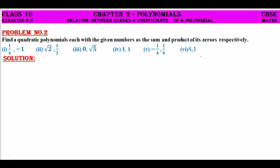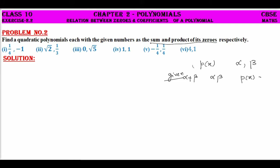Now in our previous problem, we were given a polynomial P of X and asked to find the zeros of the polynomial — alpha and beta. Polynomial is given, you are asked to find the zeros. In this problem, you are given the sum and product of zeros and asked to find the polynomial. The sum and product of zeros means you are given alpha plus beta and alpha into beta. You have to find what is P of X.